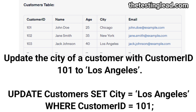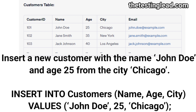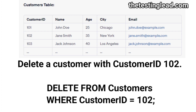Update the city of a customer with customer ID 101 to Los Angeles: UPDATE Customers SET city = 'Los Angeles' WHERE customer_id = 101. Insert a new customer with the name John Doe, age 25, from the city Chicago: INSERT INTO Customers (name, age, city) VALUES ('John Doe', 25, 'Chicago'). Delete a customer with customer ID 102: DELETE FROM Customers WHERE customer_id = 102.